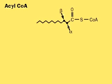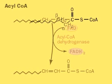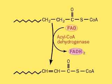A four-step process removes two carbon units from fatty acids. In the first step, acyl-CoA dehydrogenase and the oxidizing agent FAD convert acyl-CoA to beta-enoyl-CoA, an unsaturated acyl-CoA.